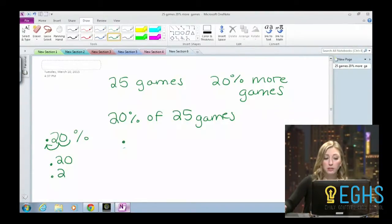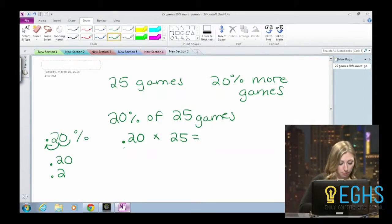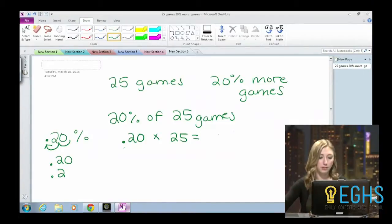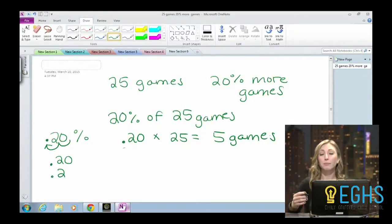So then what we're going to do is take that .20, and then when we're finding a percent of something or a portion of something, what you do is you multiply. So I'm going to do .2, or .20 times 25. And I'm going to use my calculator. So that's going to be five games. So 20% of 25 is five games. So that means that he played five more games this year than he did last year.